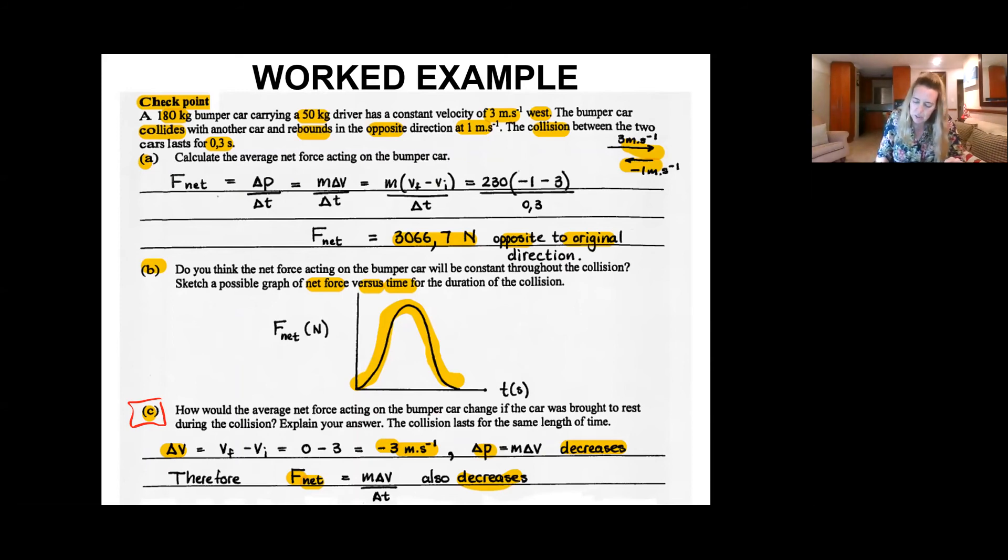So the change in velocity, as we know, will be the final minus the initial velocity. The final velocity, we now say the car now stops instead of just rebounding at some other velocity in the opposite direction. And I subtract the original, the initial velocity of three meters per second. That gives me negative three meters per second.